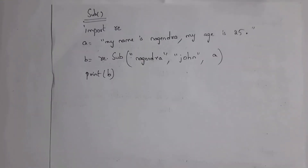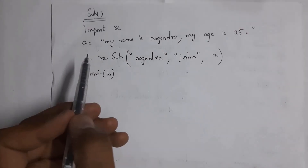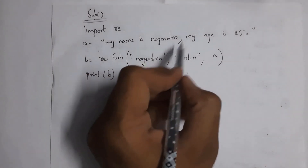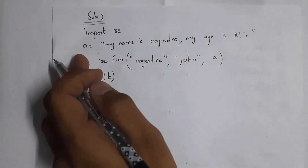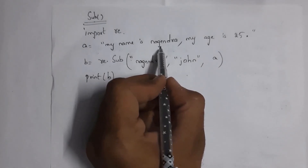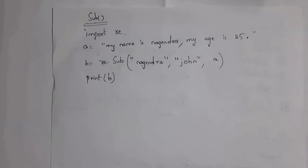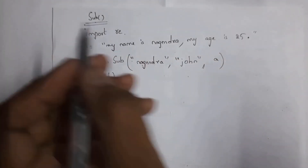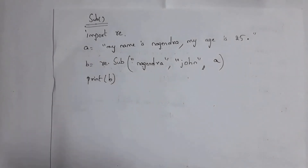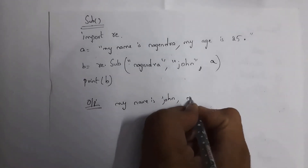Next is the sub function, where sub stands for substitute — substitute means replace. If you want to replace any string you can use the sub function. I write: import re, a = 'my name is Nagendra, my age is 25', then b = re.sub('Nagendra', 'John', a). This will replace 'Nagendra' with 'John'. When you print(b) you get output: 'my name is John, my age is 25'.